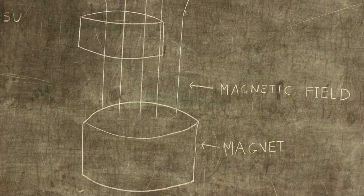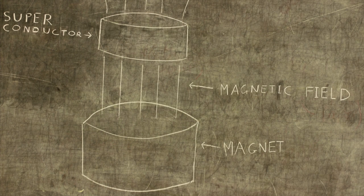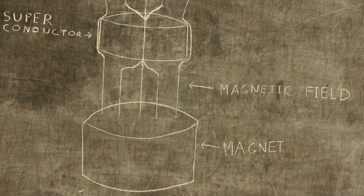When a superconductor is placed into the magnetic field above a magnet, it expels all the magnetic fields from within itself, except for weak points where the magnetic field lines are locked inside.